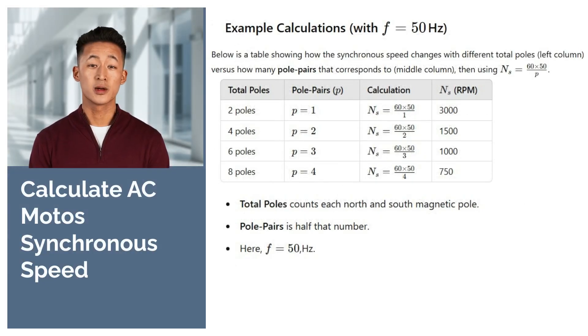Let's take a quick look at the example calculations on the screen. They show how the synchronous speed changes with different total poles, and thus different pole pairs, and walk you through using the formula: ns equals 60 times f divided by p.